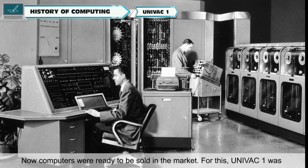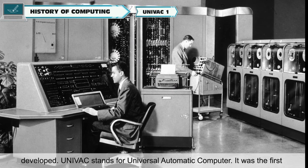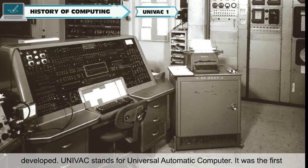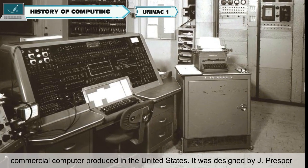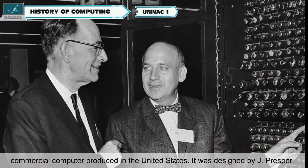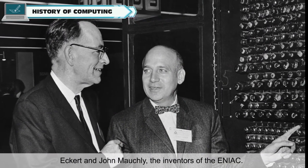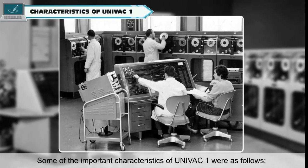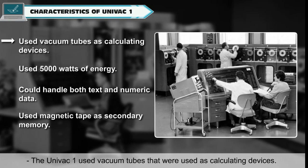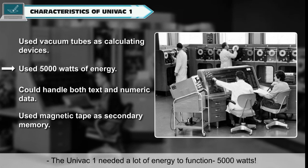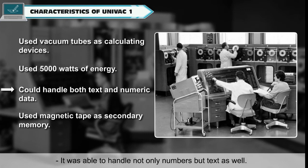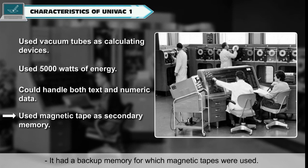Now computers were ready to be sold in the market. For this, UNIVAC 1 was developed. UNIVAC stands for Universal Automatic Computer. It was the first commercial computer produced in the United States, designed by J. Presper Eckert and John Mauchly, the inventors of ENIAC. Some important characteristics of UNIVAC 1 include: it used vacuum tubes as calculating devices, it needed a lot of energy to function — 5000 watts — it was able to handle not only numbers but text as well, and it had a backup memory for which magnetic tapes were used.